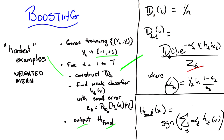And remember, alpha sub t is one half of the natural log of (1 minus epsilon t) over epsilon t. That is to say, it's a measure of how well you're doing with respect to the underlying error. So you get more weight if you do well than if you do less well. It's a weighted average based upon how well each of the individual hypotheses is doing.